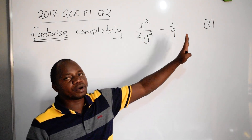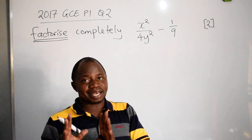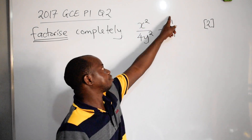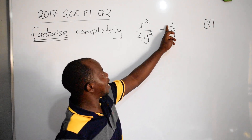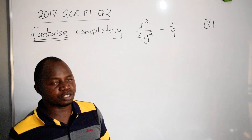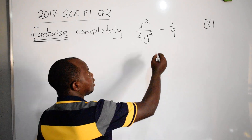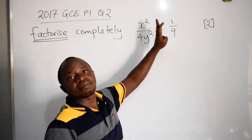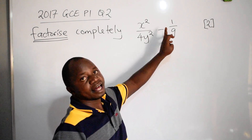For difference of two squares, we always have two terms. This is term one and term two. Those two terms must have a subtraction symbol in between — always a minus, never a plus — and then you conclude this is difference of two squares.